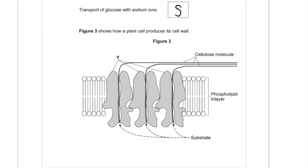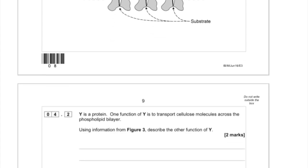Now we've got a figure showing how a plant cell produces its cell wall. So you've got a phospholipid bilayer, we've got what's looking like some channel proteins, you've got a substrate going in and cellulose going out.